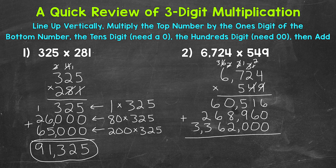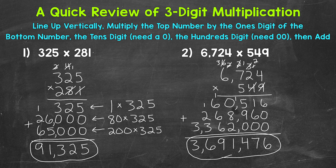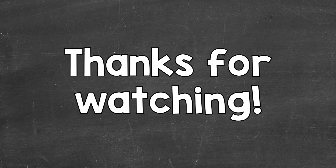Starting with the ones place: 6 plus 0 plus 0 gives us 6. 1 plus 6 is 7. 5 plus 9 is 14 — carry the 1. 1 plus 0 is 1, plus 8 is 9, plus 2 is 11 — carry the 1. 1 plus 6 is 7, plus 6 is 13, plus 6 is 19 — carry the 1. 1 plus 2 is 3, plus 3 is 6. And then we have a 3 in the millions place — put our commas — and this is our final answer: 3,691,476. So there you have it — a quick review of three-digit multiplication. I hope that helped. Thanks so much for watching.